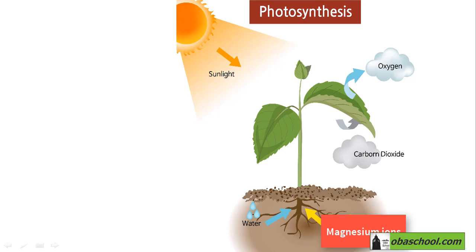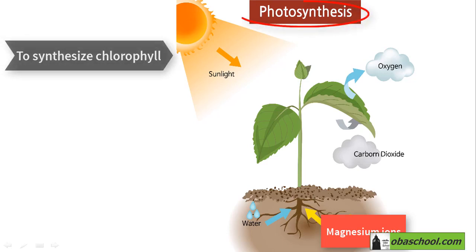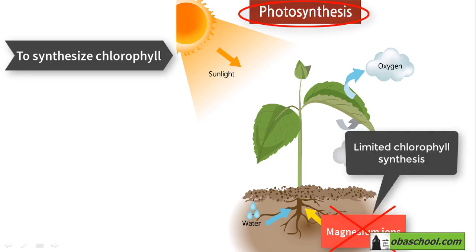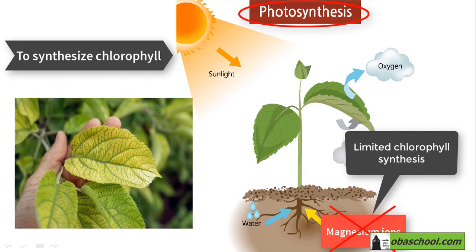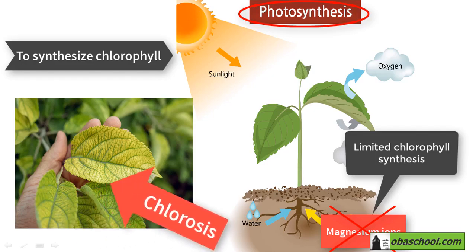Plants take magnesium ions from the soil to make the chlorophyll needed for photosynthesis. If the level of magnesium ions in the soil is low, the plant cannot make enough chlorophyll. The leaves will become yellow and the growth will slow down because the plant is not photosynthesizing well. The yellowing of leaves due to lack of magnesium ions is known as chlorosis.